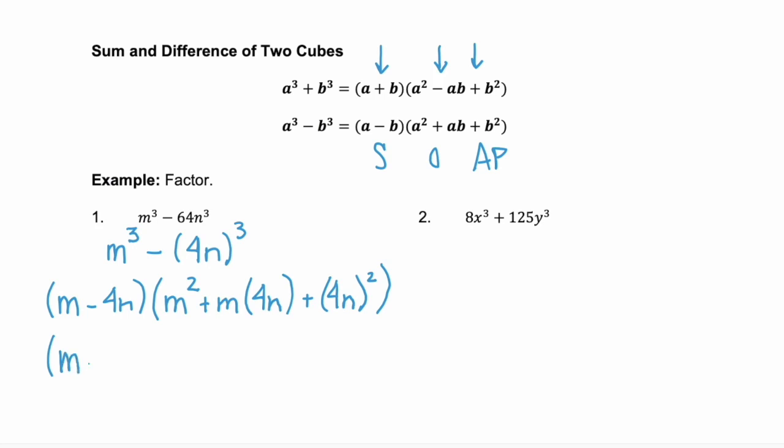Now we can expand these. Our binomial stays as m minus 4n, m squared, plus 4n times m is 4mn. We like to keep our variables in alphabetical order. And then 4n, that whole thing squared, becomes 16n squared. So we just factored the difference of two cubes.